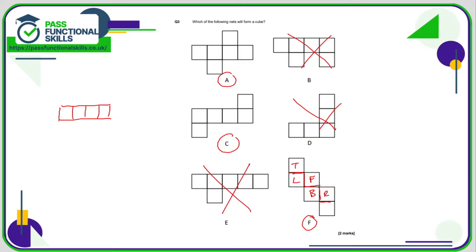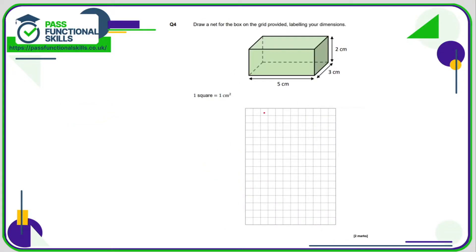Question number four: to begin with, you just need to pick a side. I'm going to pick the five by three rectangle and just draw it here — so it's five wide by three. I'm going to stick it somewhere in the middle and hopefully I won't run out of space. I'm going to imagine that these sides are going to be folded out, so that's going to be a three by two — the three is shared with the three of the five by three. These sides will fold out like so.